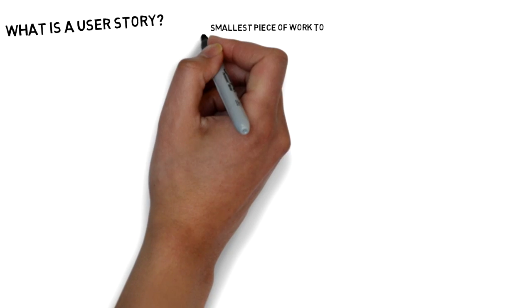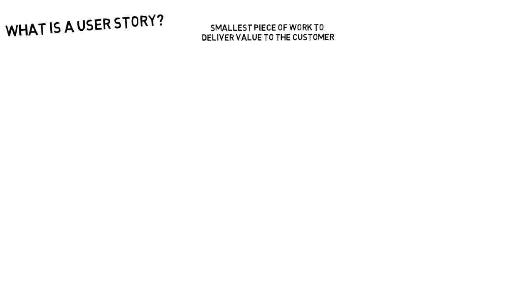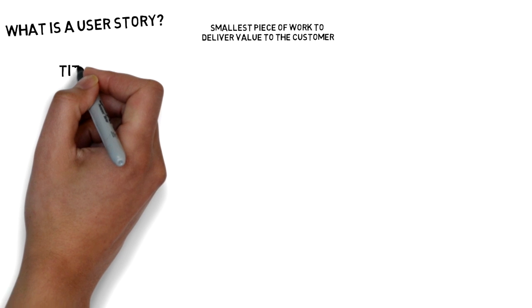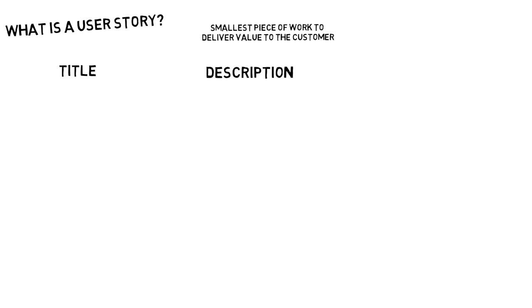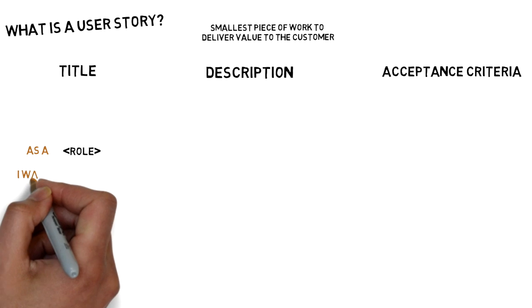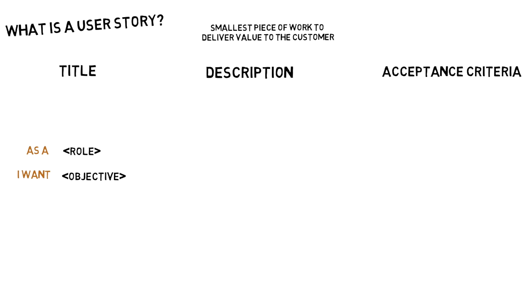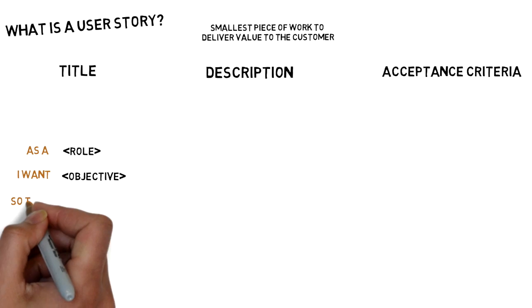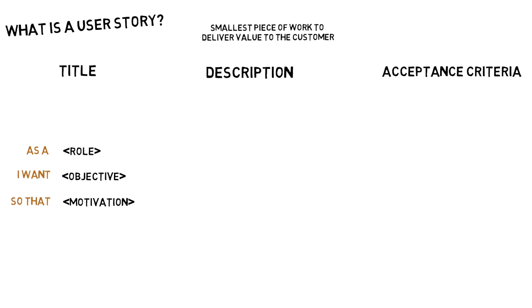A user story is the smallest piece of work that represents some value to an end-user. It contains the following elements: title, description, and acceptance criteria. The title of a user story follows a basic formula: as a role, I want an objective so that I can achieve a motivation.